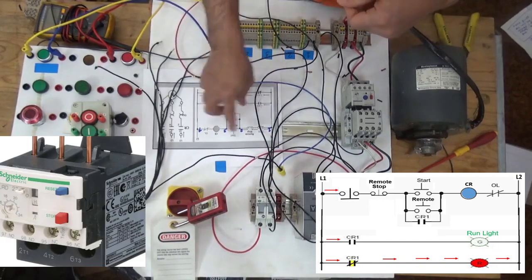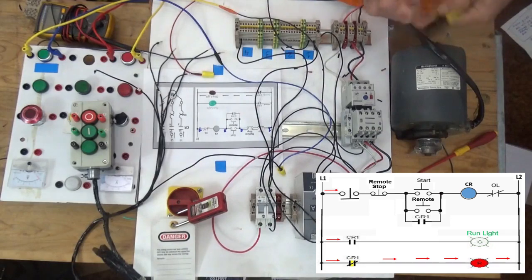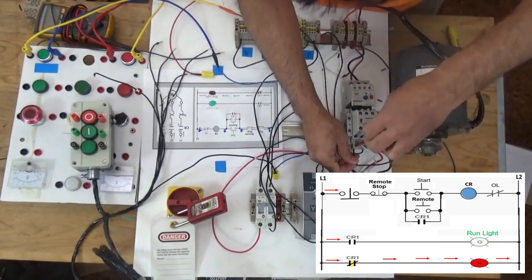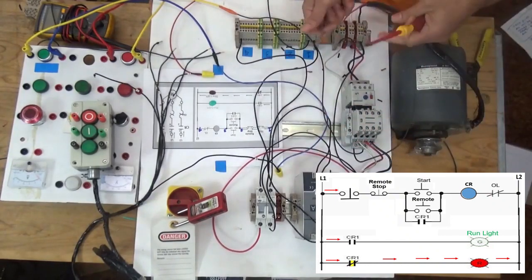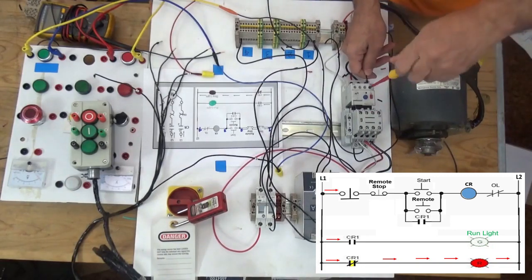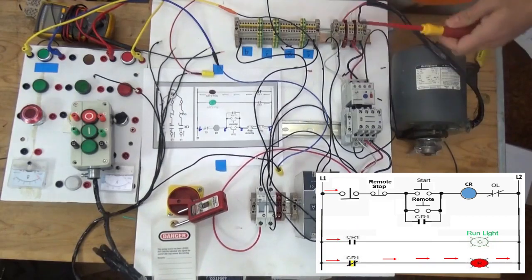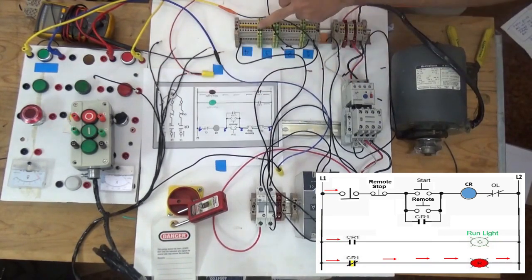A2 is going to overload relay. Overload relay normally closed here. And from NC going to line 4.